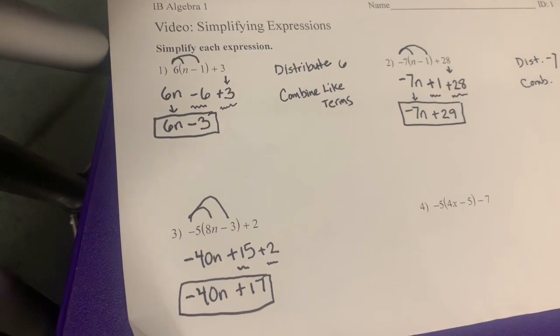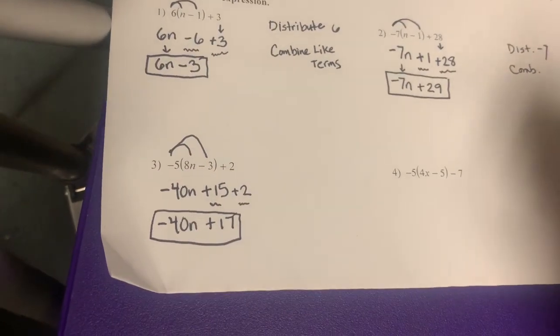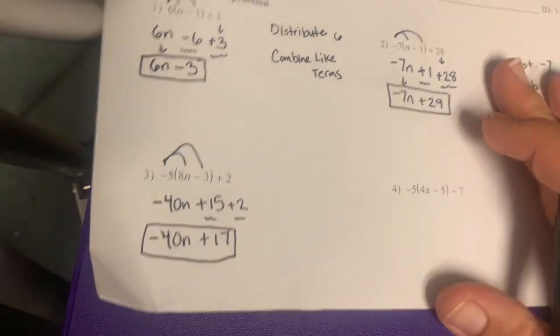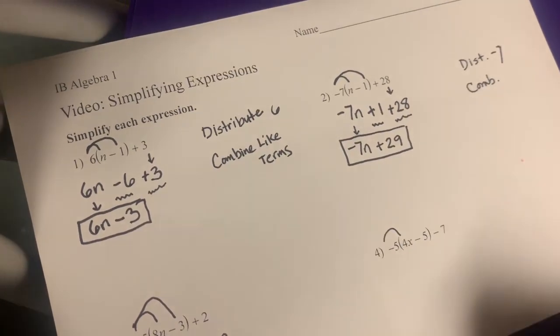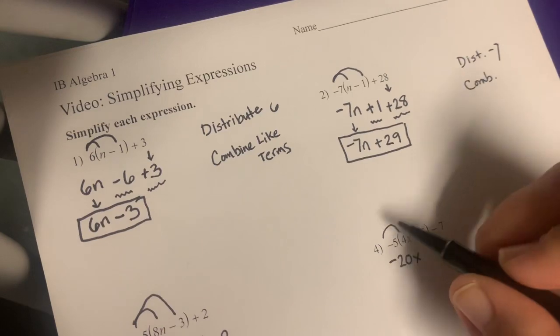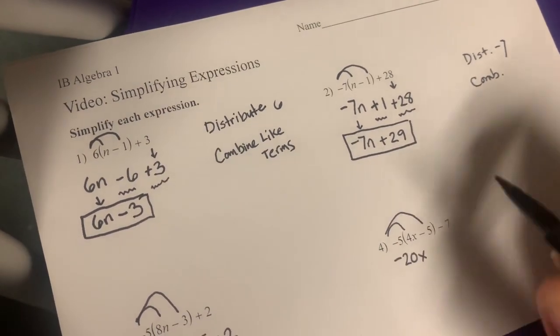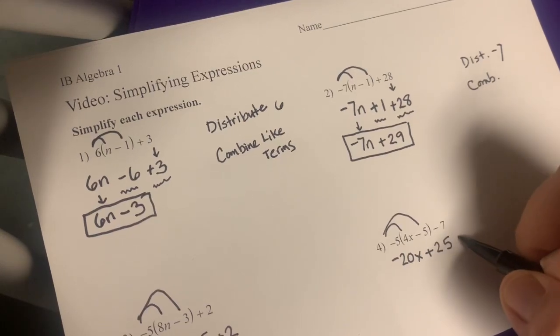Now would be a good time to pause the video and maybe try the last one on your own. All right, welcome back. So now we're going to distribute this negative 5 through our parentheses here, and we're going to get negative 5 times 4x is going to be negative 20x. And then negative 5 times negative 5 is a positive 25.